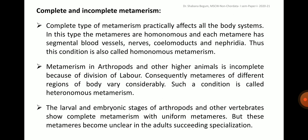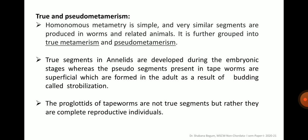The larval and embryonic stages of arthropods and other vertebrates show complete metamerism with uniform metameres, but these metameres become unclear in the adult succeeding specialization. True segments in annelids are developed during embryonic stages, whereas the pseudo-segments present in tapeworms are superficial, which are formed in the adult as a result of budding called strobilization. The proglottides of tapeworms are not true segments but rather complete reproductive individuals.